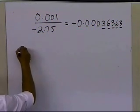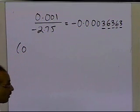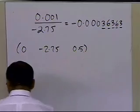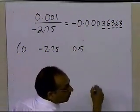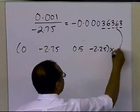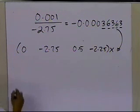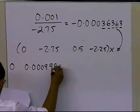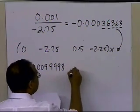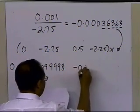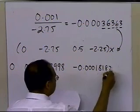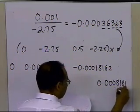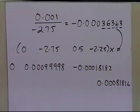I take the second equation — 0, minus 2.75, 0.5 — with right-hand side minus 2.25, and multiply by the multiplier minus 0.0036363. The results are: 0, then 0.009998, then minus 0.0018182, and the right-hand side value is 0.0081816. All these calculations are being done with five significant digits with chopping, so that's what you get.